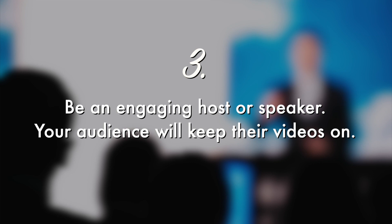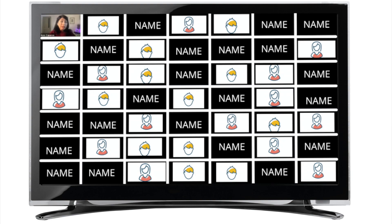The third requirement to have 49 videos on screen is not really within the capacity of Zoom — it already depends on your capacity as the host. This requirement is: you've got to engage your audience, because you might have 49 videos in the beginning, but one by one the attendees turn off their video, so that in the end you only see names or profile photos.